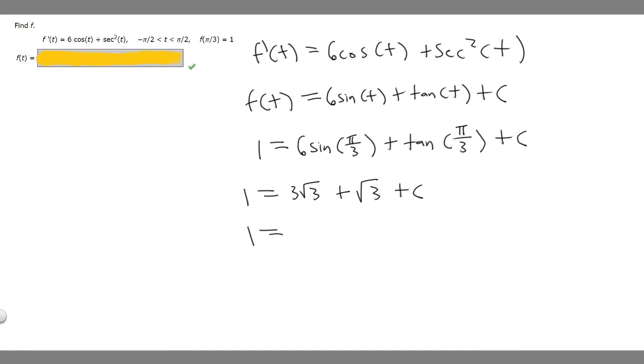And so we can simplify this to 1 equals, if we add like terms, this is going to become 4 radical 3 plus c. Then we can subtract 4 radical 3 from both sides to get c. So c is going to be equal to 1 minus 4 radical 3.